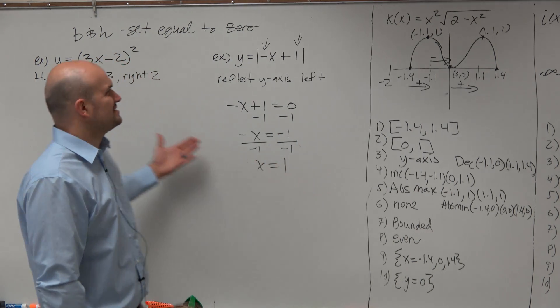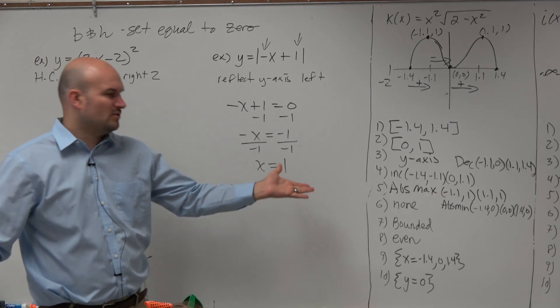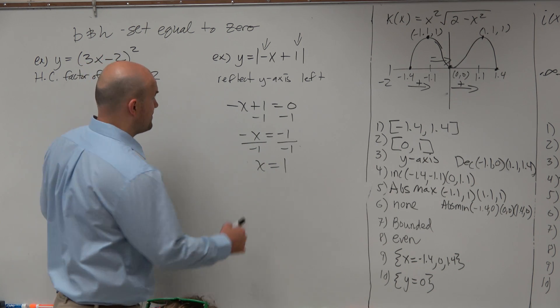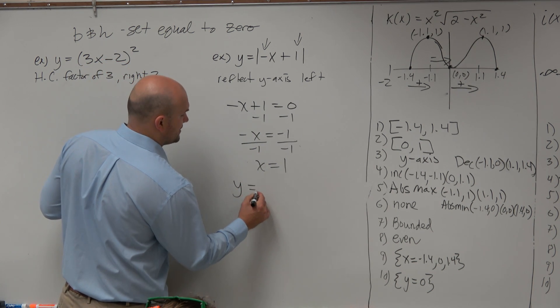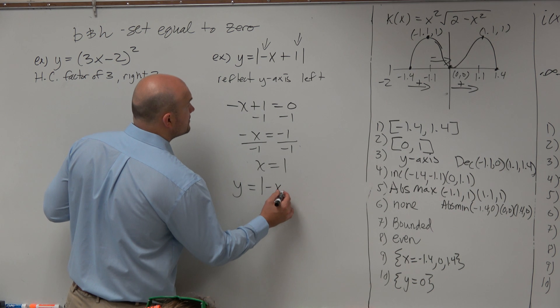Now, you might still say, well, it still doesn't make sense. Why are you setting it equal to 0? What is x equals 1 transformation? So let's look at it a different way. Here's your equation: y equals absolute value of negative x plus 1.